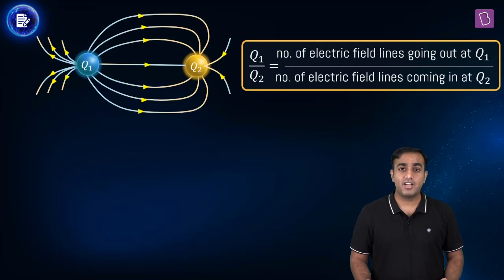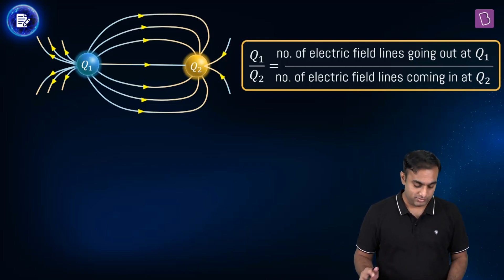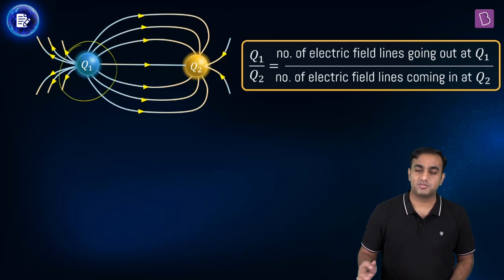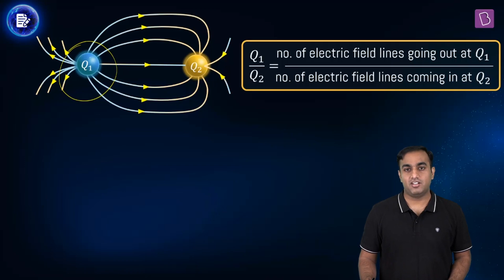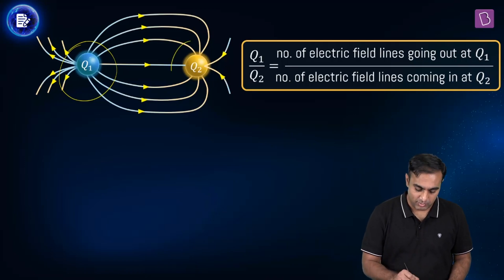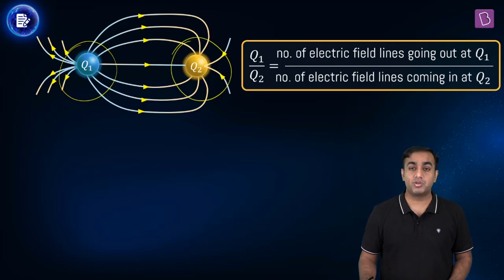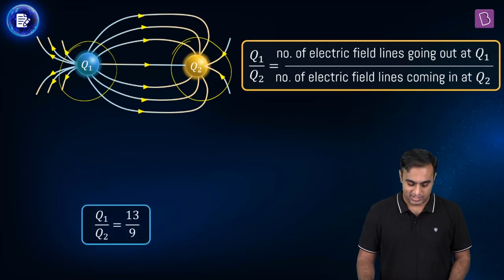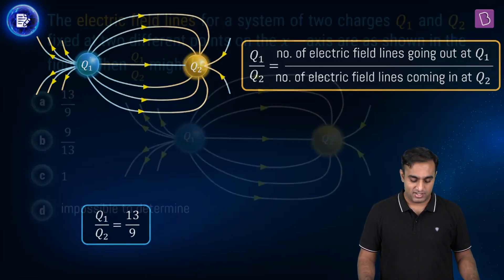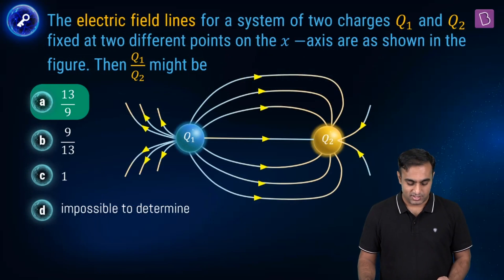How many field lines originate from Q1? Count them — it happens to be thirteen. And the number of field lines ending at Q2 happens to be nine. So the answer for Q1 by Q2 is thirteen by nine. That's the final answer. Looking at the options, the right one is A.